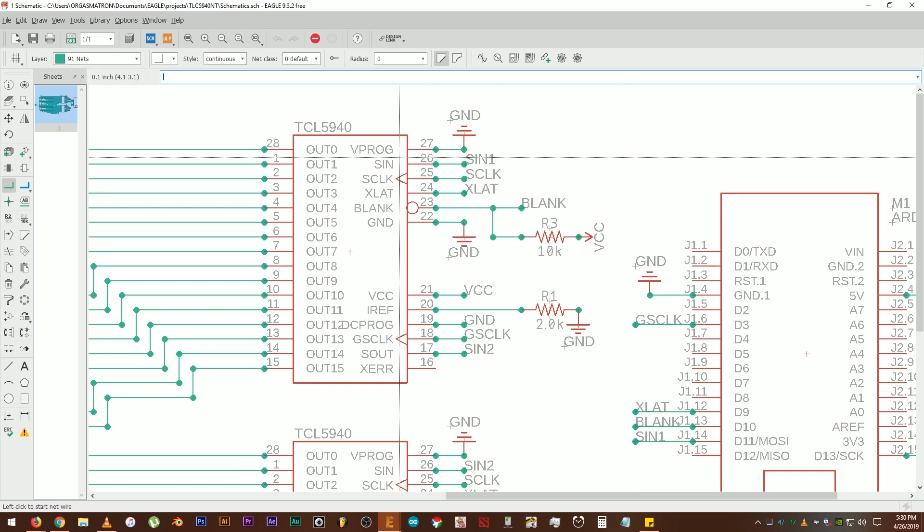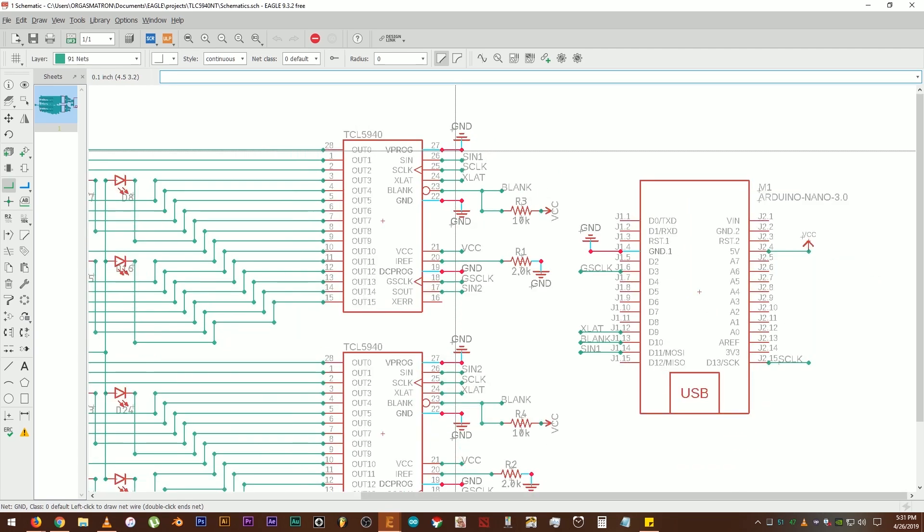First up is VPRG or Vprog. As you can see here, both Vprogs of the two ICs are connected to the ground pin of the Arduino Nano. SYN1 or serial data input of the first IC is connected to D11 or pin number 11 of the MCU. Both SELK pins of the ICs are connected to pin number 13. Both X-LAT pins are connected to pin number 9.